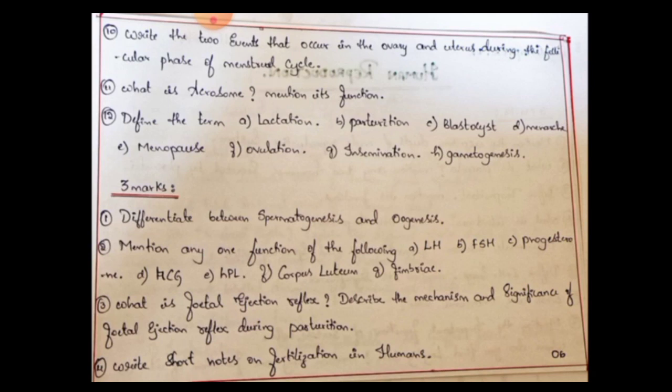3-mark questions: Differentiate between spermatogenesis and oogenesis — this is a flowchart question. Mention any one function of the following hormones or parts: LH (Luteinizing Hormone), FSH (Follicle Stimulating Hormone), Progesterone, HCG, HPL, Corpus Luteum, Fimbriae. Use full forms — FSH stands for Follicle Stimulating Hormone, LH for Luteinizing Hormone.